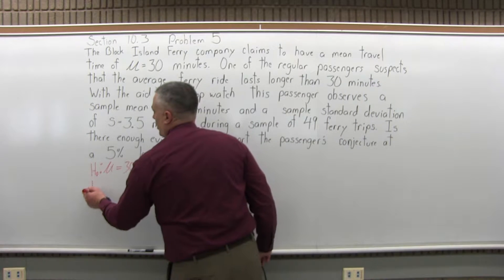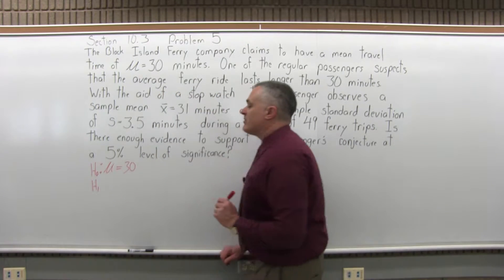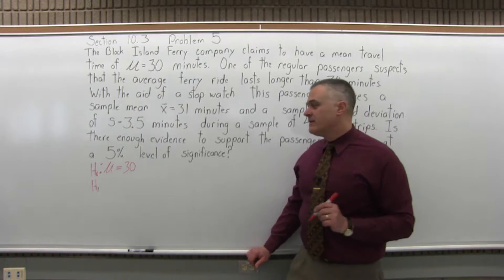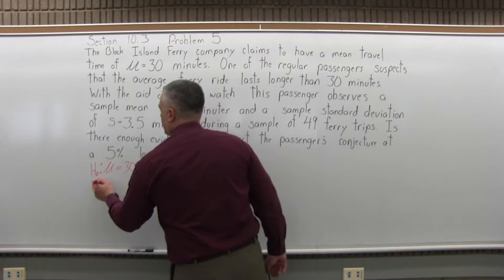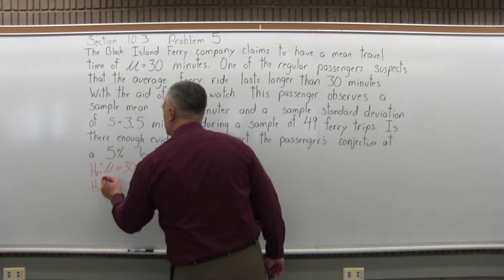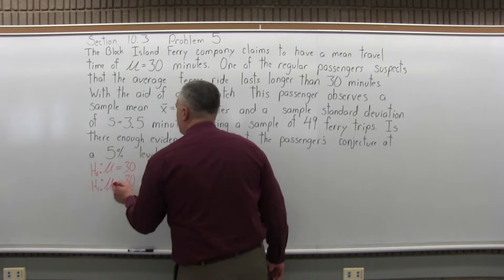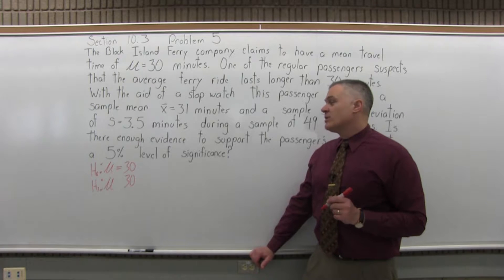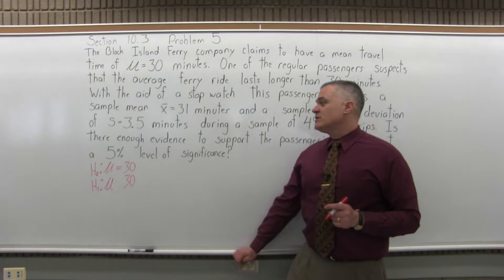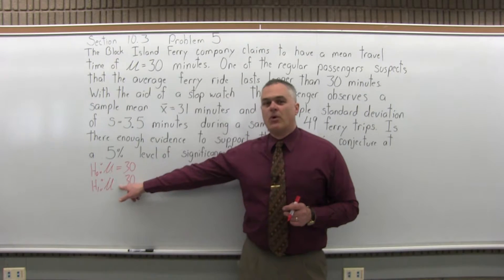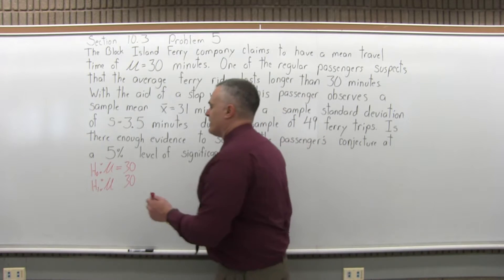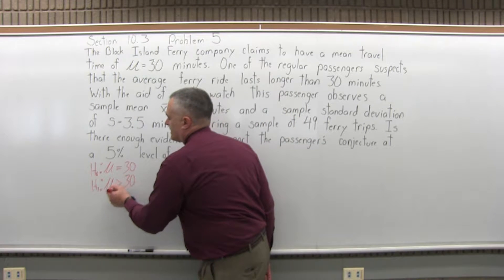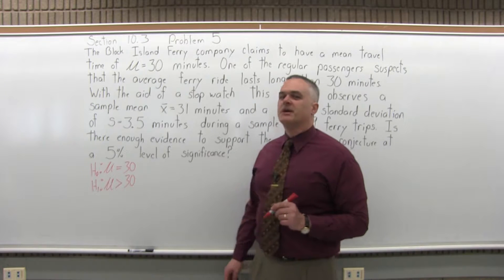Step 2, state the alternate hypothesis. You'll have a capital H with a subscript of 1. You put the colon again, the μ, the same number, but there'll be a different symbol besides equal. So what are we testing here? This passenger feels that the average is really more than 30, that the Block Island Ferry Company is sort of trimming it down a little bit to make it sound good. He thinks it's really a little bit bigger.